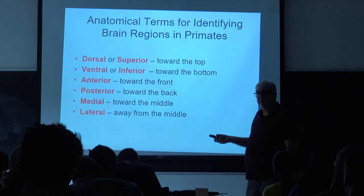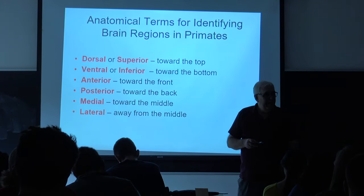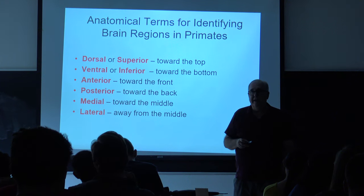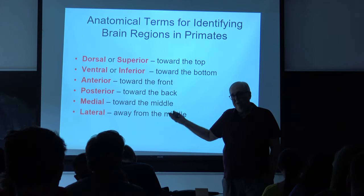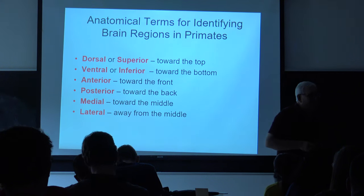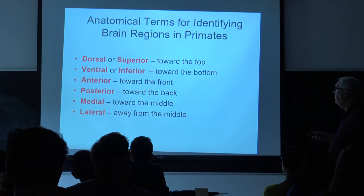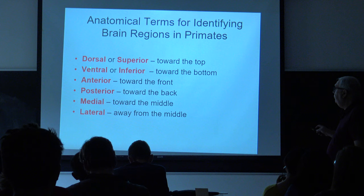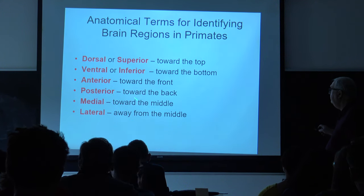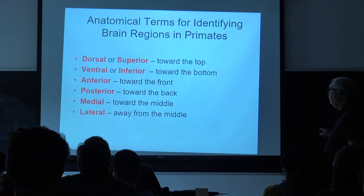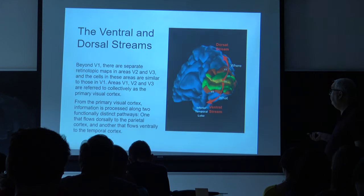We know a lot about primary visual cortex, and after that all hell breaks loose and we're pretty much clueless. Some nomenclature: dorsal or superior means toward the top, ventral or inferior means toward the bottom, anterior toward the front, posterior toward the back, medial toward the middle, lateral away from the middle. These are the terms we use to describe different regions of the brain.